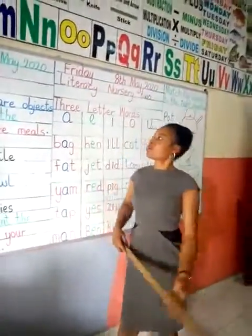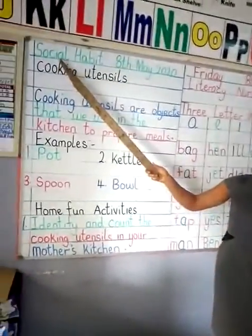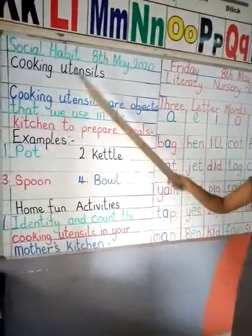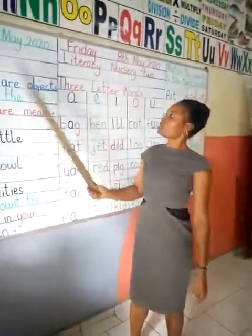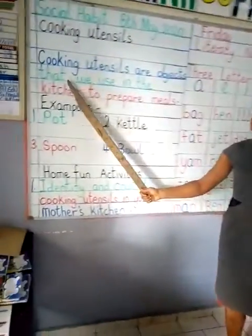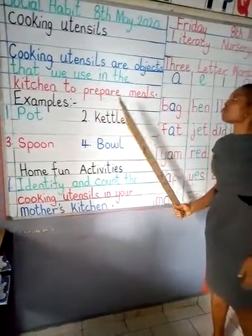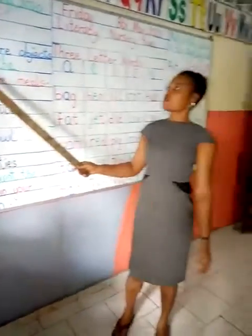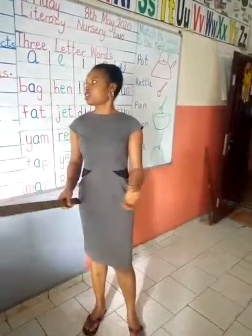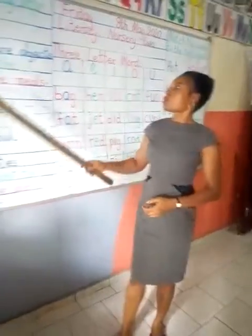Hello once again. We are treating the subject's social habits. Cooking utensils — that's the topic. Cooking utensils are objects that we use in the kitchen to prepare meals. The objects or items, the things you use in the kitchen to cook food. Those things your mommy uses in the kitchen to cook food for you are known as cooking utensils.